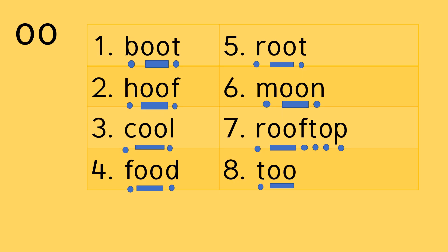Let's have a go at some more. If you don't want to hear me blend them, pause the video and get your child to read these words using their blending. If they're struggling, prompt them to use the sound buttons at the bottom. I'll do each one and then you say it after me: number one — B, OO, T — boot; number two — H, OO, F — hoof; number three — K, OO, L — cool; number four — F, OO, D — food; number five — R, OO, T — root; number six — M, OO, N — moon.